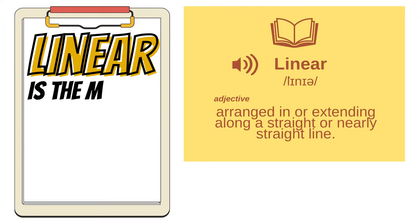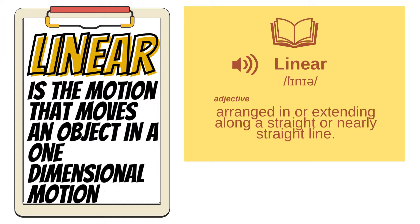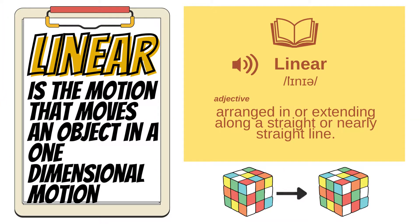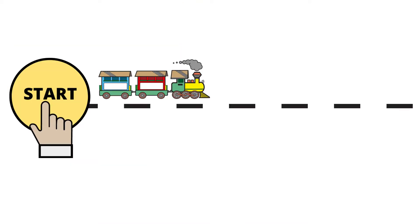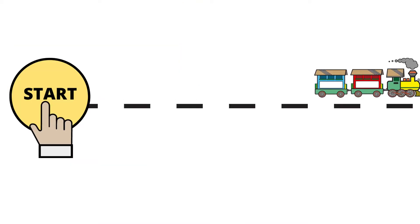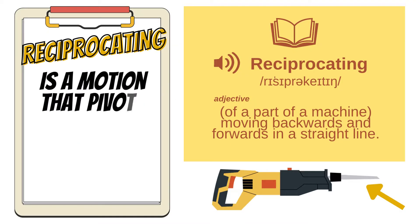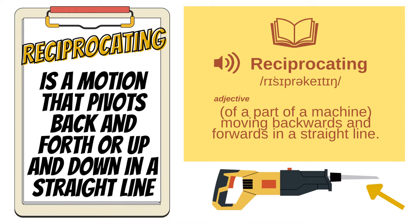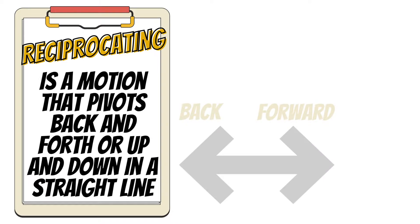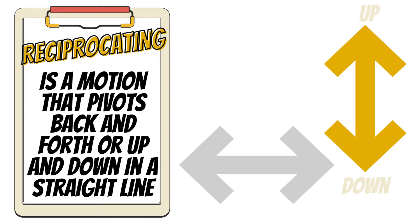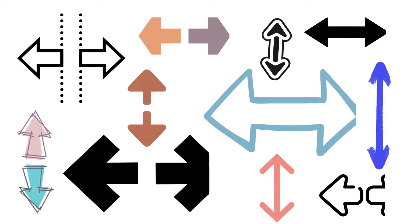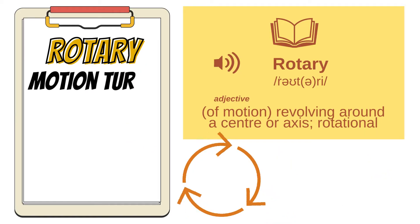Starting with linear: linear is the motion that moves an object in one-dimensional motion along a straight line from its starting point. Reciprocating is a motion that pivots back and forth or up and down in a linear motion. It is a cycle of two opposite motions — back and forth.